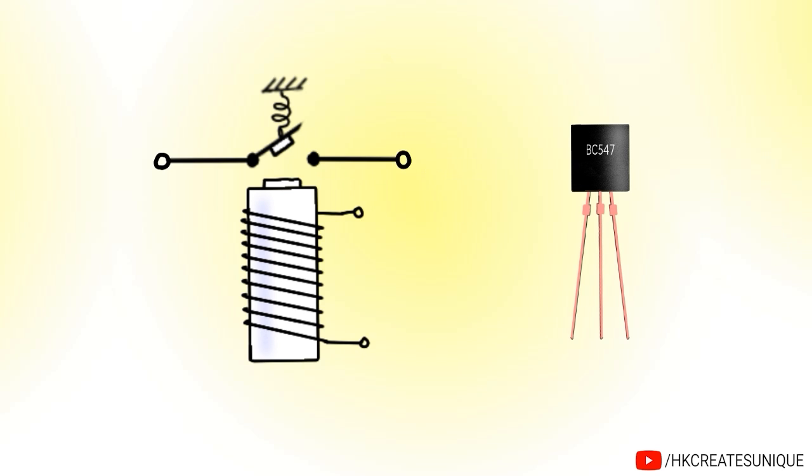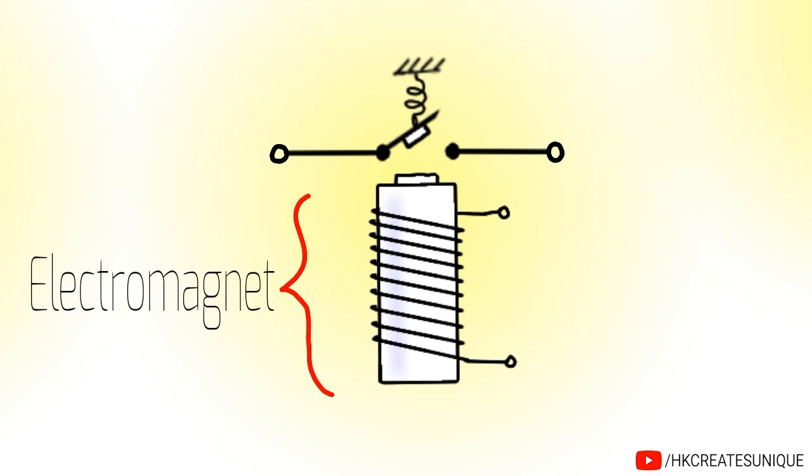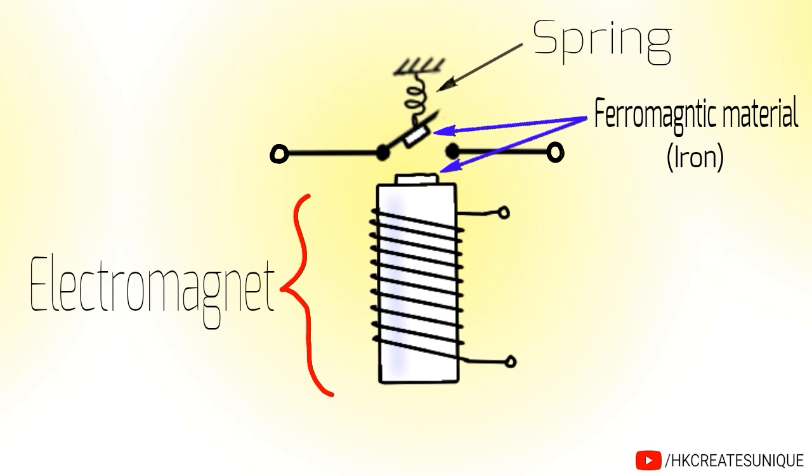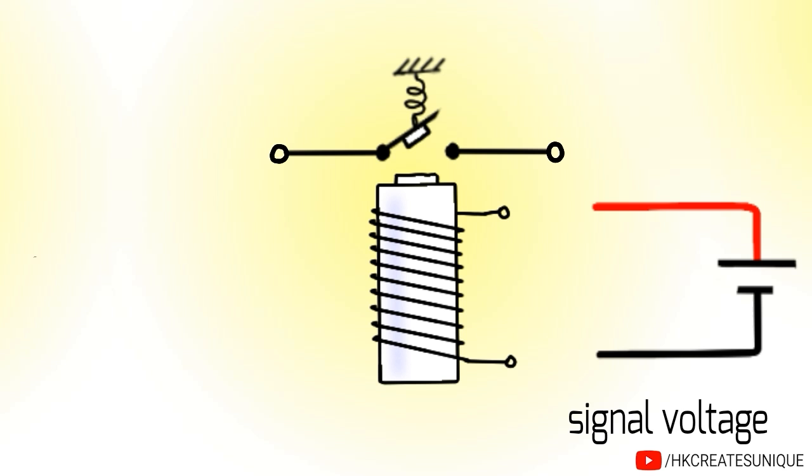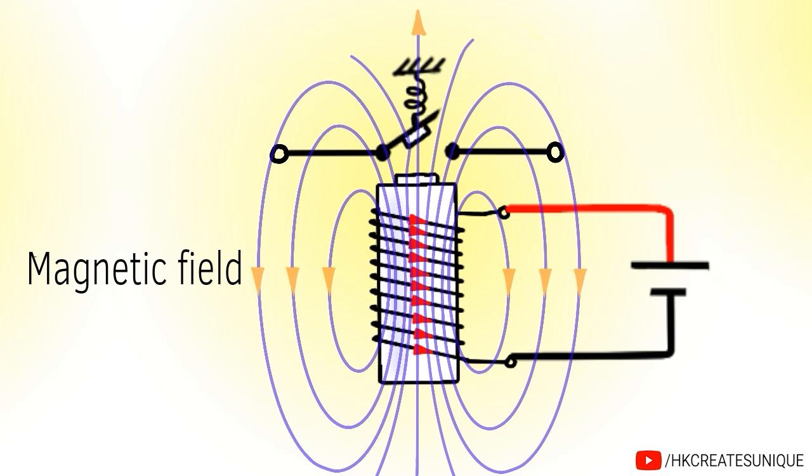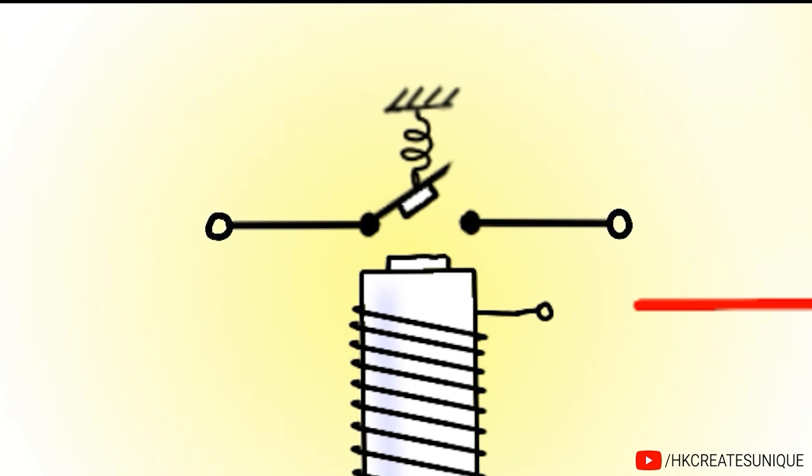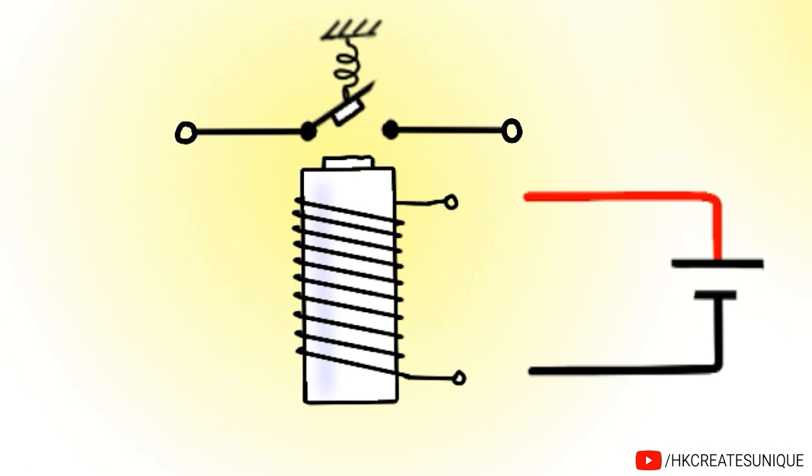Relays and transistors are examples of electrically activated switches. A relay consists of an electromagnet, a spring, and ferromagnetic materials like iron. When a signal voltage is applied between the terminals of the electromagnet, a magnetic field is produced like this. The magnetic field pulls the ferromagnetic switch arm, activating the switch. When the signal voltage is removed, the arm is released which deactivates the switch. This way, switch is controlled electrically.